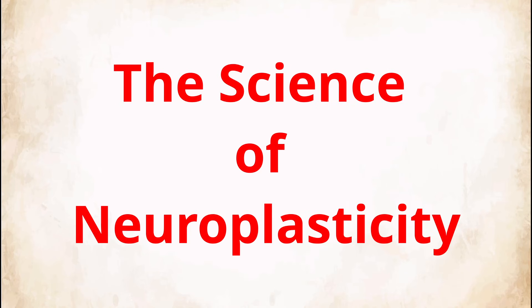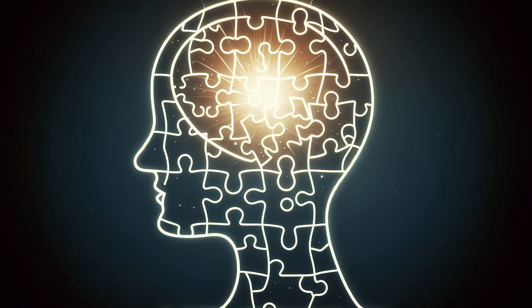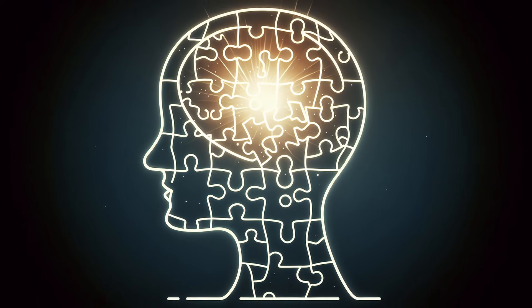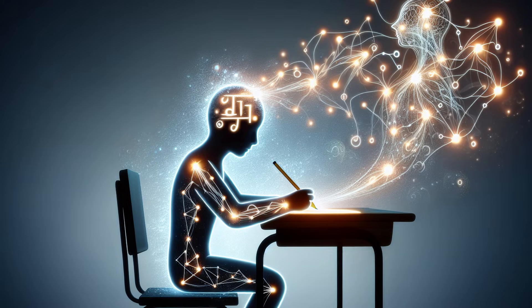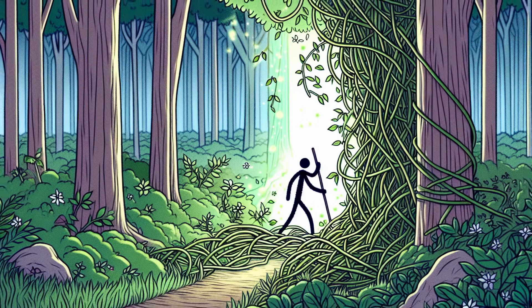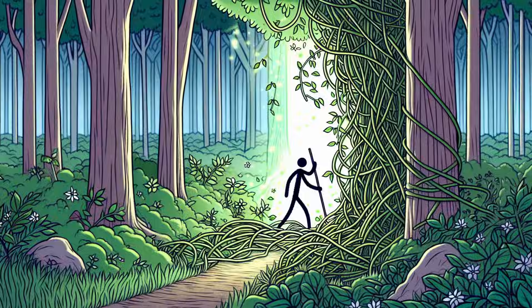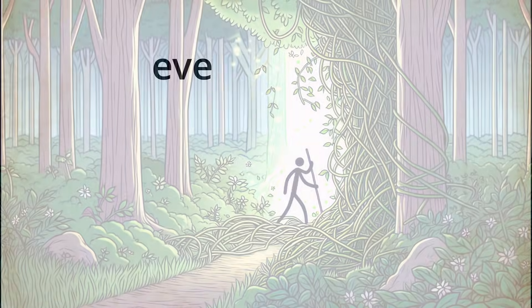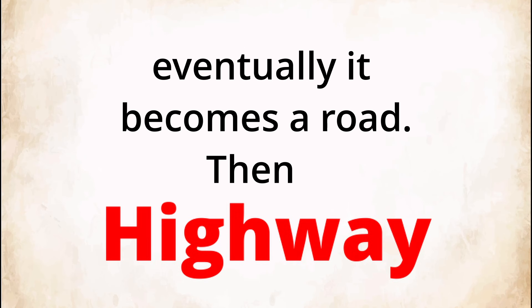The science of neuroplasticity. Neuroplasticity is your brain's ability to form new neural connections. Think of your brain as a network of trails. Every time you repeat a thought or action, you're walking down one of those trails. The more often you walk it, the clearer and wider the trail becomes. Eventually, it becomes a road, then a highway.